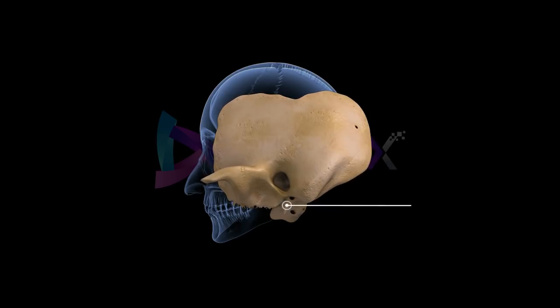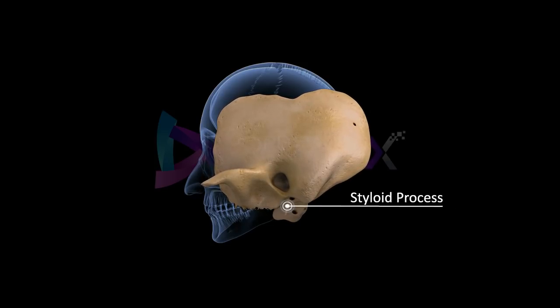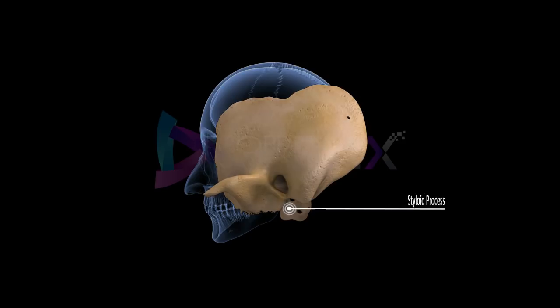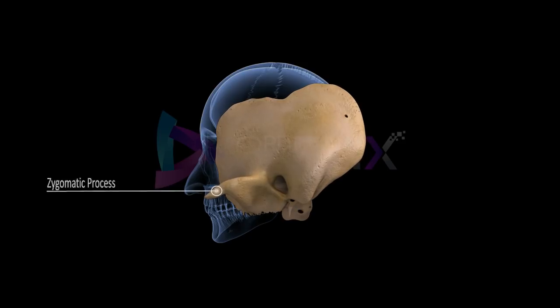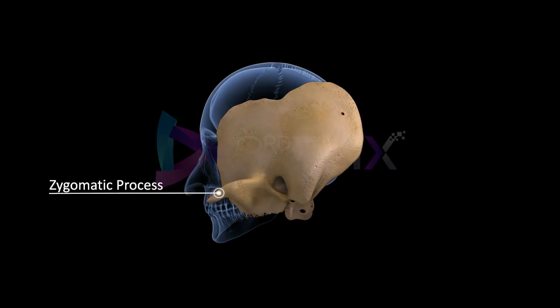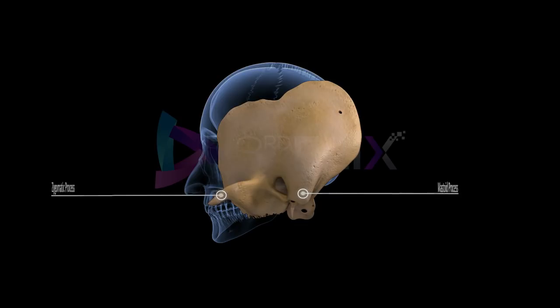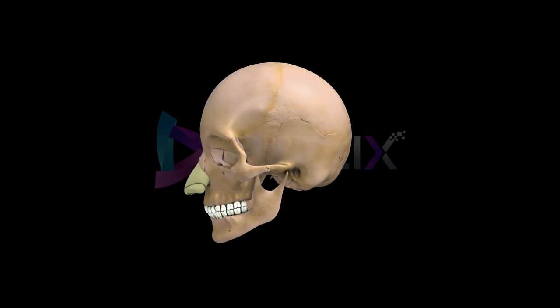Each temporal bone also has a styloid process, zygomatic process, and mastoid process for articulation with the facial bones.